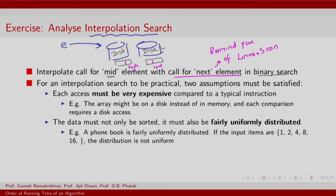When is interpolation search practical? It makes sense only if every access is very expensive — retrieving arrays from different disks and going back and forth is expensive, so each comparison may require a disk access. The other requirement is that data must not only be sorted, it must be fairly uniformly distributed. You do not want a sequence like 1, 2, 4, 8, 16 where binary search may not be productive. A phone book is fairly uniformly distributed. You can try the exercise of formulating and analyzing the interpolation search algorithm.